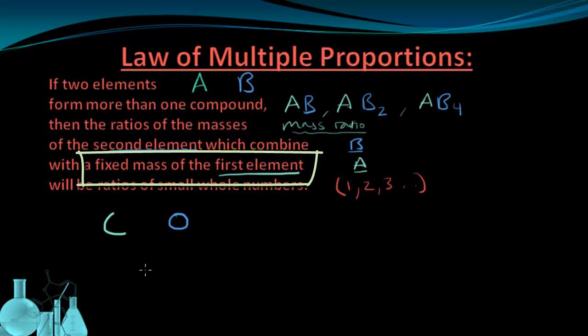The carbon has to have a fixed mass. So we're going to say we have 100 grams of carbon. And carbon can form two different compounds with oxygen. The first one it can form is carbon monoxide. The second compound it could possibly form is carbon dioxide.